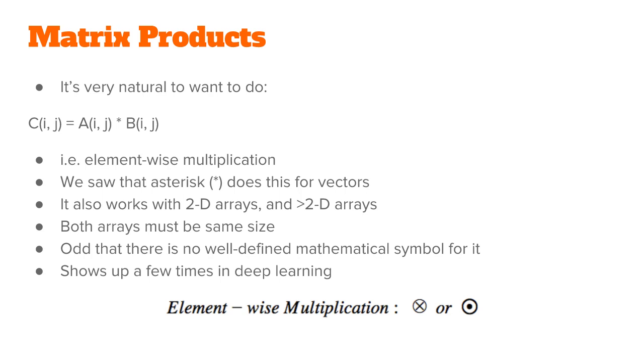Another thing that's odd when we're writing down mathematical equations is that there isn't even a well-defined symbol for element-wise multiplication. Sometimes researchers use a circle with a dot inside it, sometimes they use a circle with an x inside it, but there doesn't seem to be a standard way of writing it in math, even though it shows up quite a bit in machine learning due to the way gradients work.